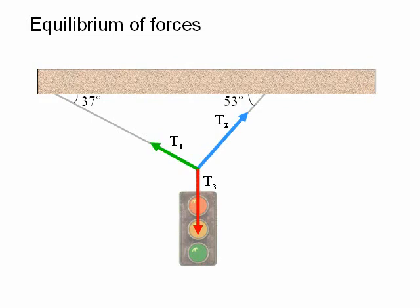The forces or tensions in the cables are labeled T1, T2, T3 respectively. Notice that the tension in the vertical cable, T3, must be equal and opposite to the weight of the traffic light, since the traffic light is in equilibrium, and therefore the resultant force on it must be zero. T3 is therefore equal to 100 newtons.